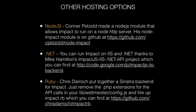There are other hosting options for Impact. If you're interested in using Node.js, Connor Petzold made a Node.js module that allows Impact to run on a Node HTTP server — you can find that on his GitHub page. There is a .NET backend so you can run Impact on IIS and .NET, thanks to Mike Hamilton's Impact.js IIS .NET API project on Google Code. There is also a Ruby backend — Chris Daric put together a Sinatra backend for Impact. To get that up and running, you remove the .php extensions from the API calls in the level editor's config file and fire up impact.rb, which you can also find on GitHub.